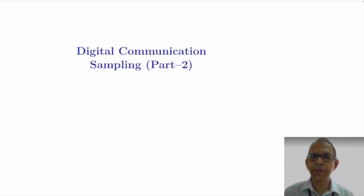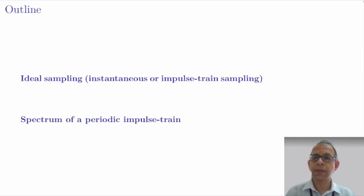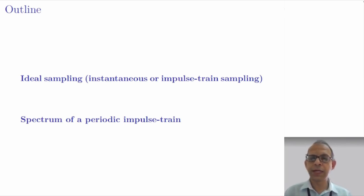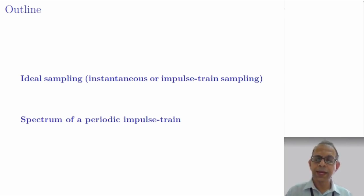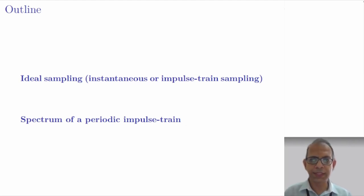Hello friends. In this lecture we will continue with our discussion on sampling. We were looking at the ideal sampling, also called instantaneous or impulse train sampling. In this lecture we will learn how to obtain the spectrum or the Fourier transform of a periodic impulse train.